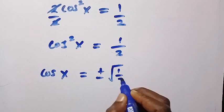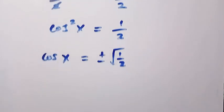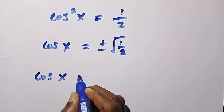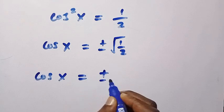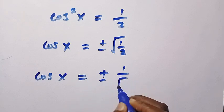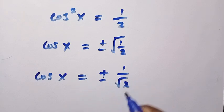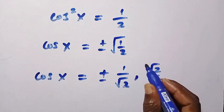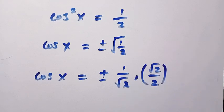Square root of 1 over 2. So this can also be simply written as cos x equals plus or minus 1 divided by root 2. And some can still write it as root 2 divided by 2. Any of these two is correct.